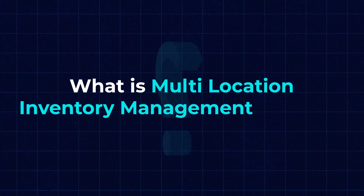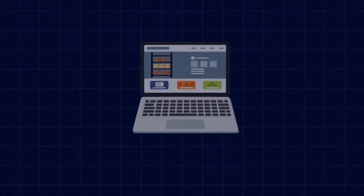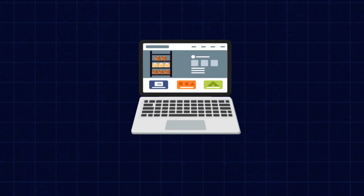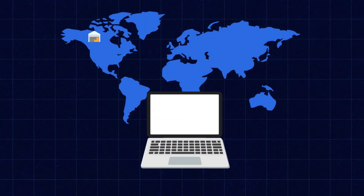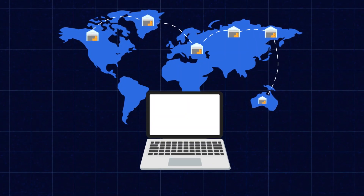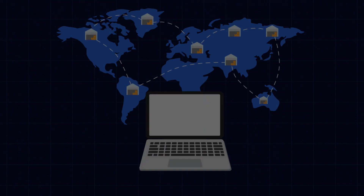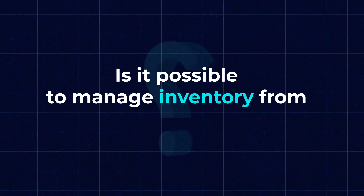What is a multi-location inventory management system? A multi-location inventory management system is a software or platform designed to manage inventory across different warehouses or locations. This type of system is particularly useful for businesses that operate in multiple locations or engage in e-commerce with a presence in different geographical areas.